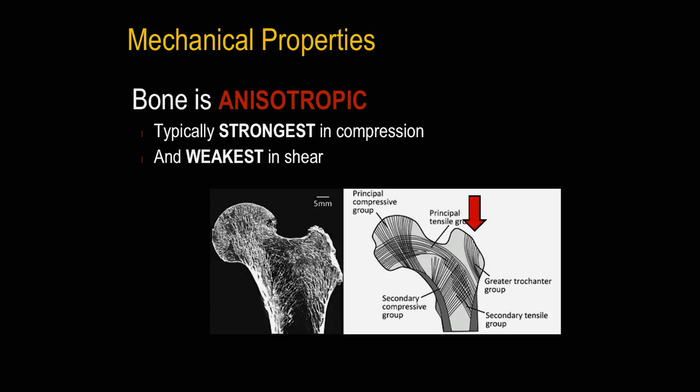Looking at a radiographic image alongside an illustrated drawing, if you can imagine a force directly applied to the top of the trochanter, it would easily shear off that edge. Whereas if you apply force from the outside, it may compress rather than shear. We can begin to imagine how the direction of both bone structure and applied force will dictate the outcome of a fracture.